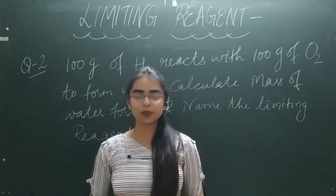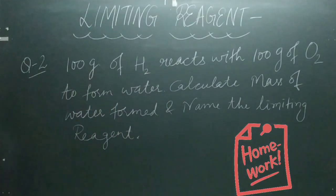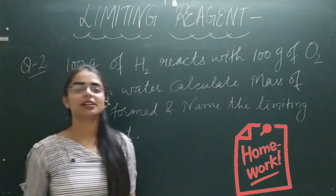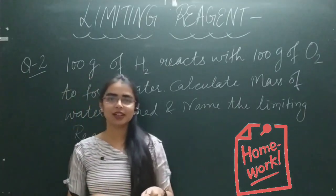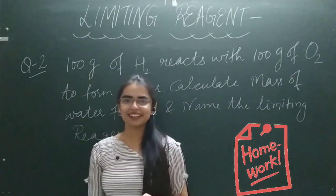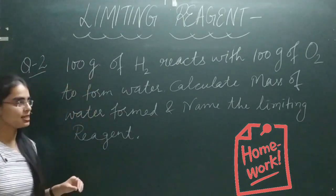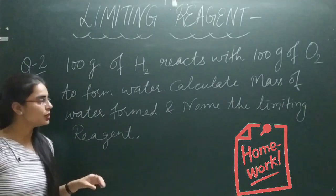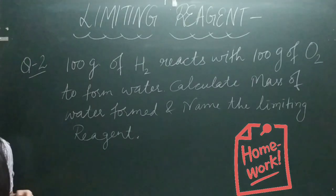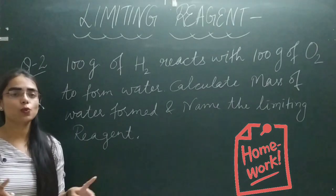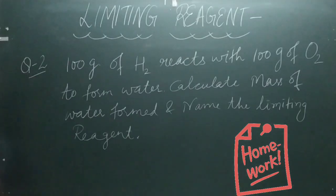Now comes question number 2 for your screen — this is a homework question for you. Pause the video, note it down, and solve it. The question is: 100 grams of H2 reacts with 100 grams of O2 to form water. Calculate the mass of water formed and name the limiting reagent. Write your answer in the comment box.